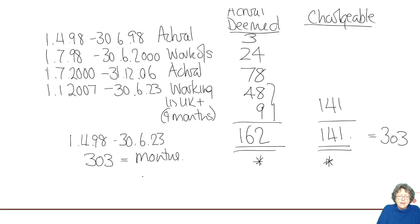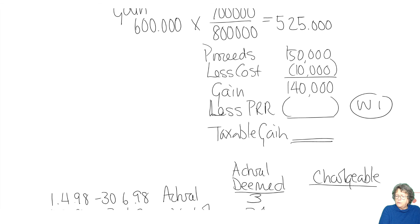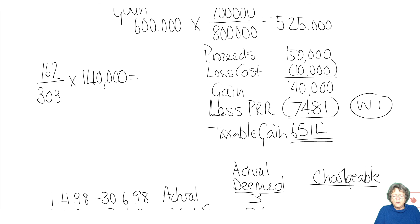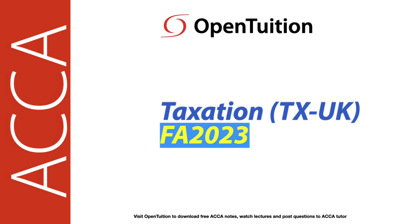We have 162 actual or deemed months. So 162 divided by the total, multiplied by the gain, will give us the PRR, which is £74,851, giving £65,149 taxable. Obviously I've worked through that question all the way through. What you need to do now is make sure that you understand how that works and how I've got through those numbers. Do your maths with your fingers.